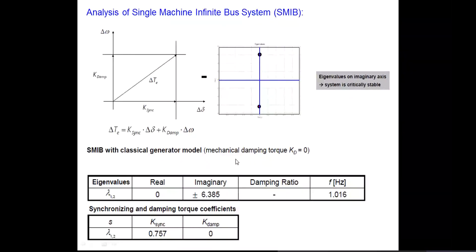For a simple system, the electromagnetic torque is represented as the sum of two components: one is the synchronizing torque component, which is a function of delta, and the other is the damping torque component, which is a function of omega. On the delta-omega axes, the vector K_damp times delta-omega represents the damping torque, and the synchronizing torque coefficient times delta represents the synchronizing torque. The electromagnetic torque del_Te is the phasor sum of these two components.